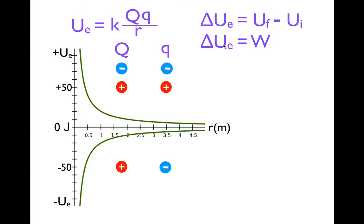When we calculate the change in potential energy, we're also calculating the amount of work that an external force does when it moves those charges either closer or farther away. In this video, we're going to bring these charges closer together. Let's assume at the beginning they're two meters apart. According to this graph, the initial potential energy Ui for the like charges would be positive — let's say 10 joules. For the opposite charges with the same magnitude, their potential energy is going to be negative: minus 10 joules.